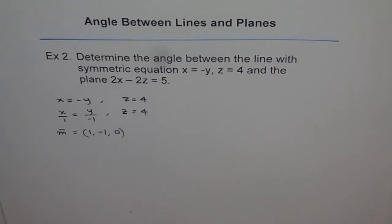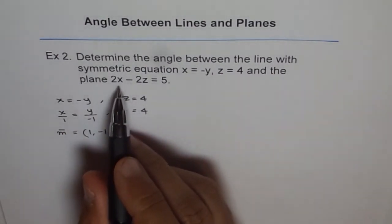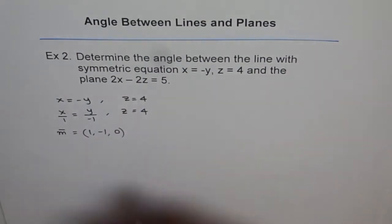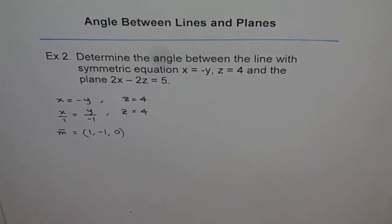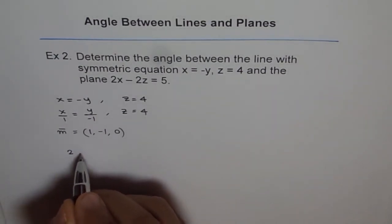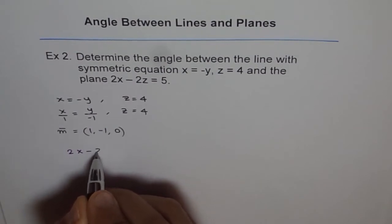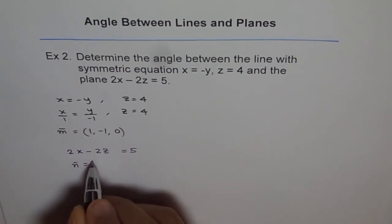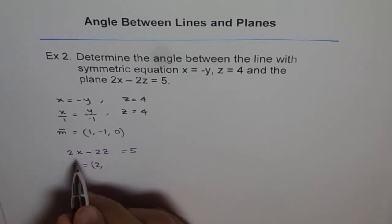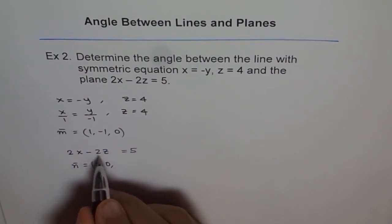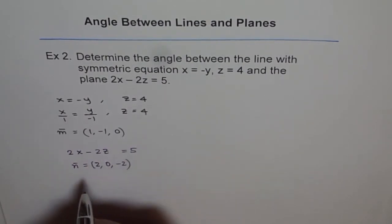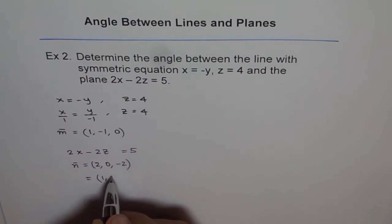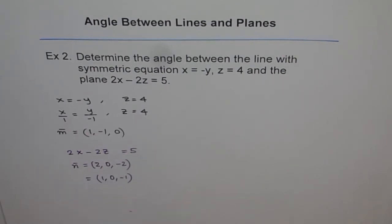For the plane, we find the normal. The equation of the plane is 2x minus 2z equals 5. So the normal vector is (2, 0, -2) for the x, y, and z components. You can simplify this and write it as (1, 0, -1). That's good practice — simplify and write it like this.